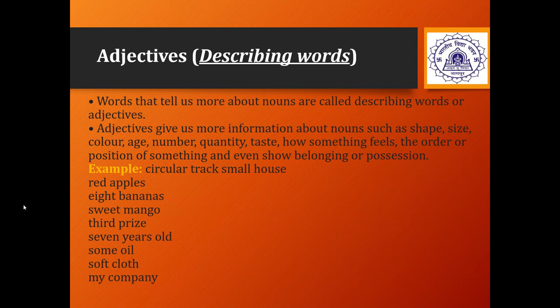Words that tell us more about nouns are called adjectives, and hence they are also known as describing words. Adjectives give us more information about nouns such as the shape, size, color, age, number, quantity, taste, how something feels, the order or position of something, and sometimes even to show possession or belonging.